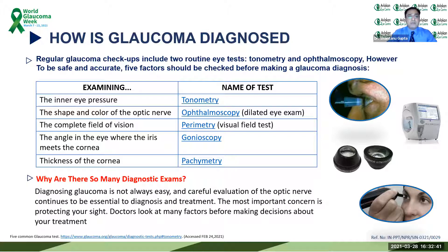Diagnosing glaucoma is not always easy, and careful evaluation of the optic nerve continues to be essential in diagnosis and treatment. The most important concern is protecting your sight. Doctors look at many different factors before making treatment decisions. There are relatively gray zones in managing this disease, but it is best left to your glaucoma specialist to decide what is best for you.